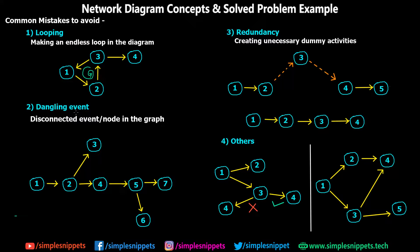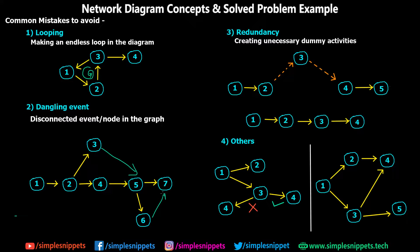The second mistake is a Dangling Event — you are not supposed to let an event stay dangling or disconnected. For example, if you have nodes 1, 2, and 3, and node 3 is left disconnected, not involved in any further activities, that is not allowed. We have to have a connected graph. Similarly, if node 6 is left disconnected, we have to connect it.